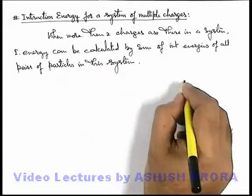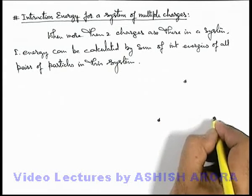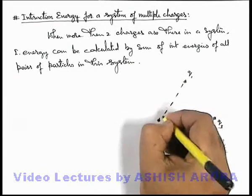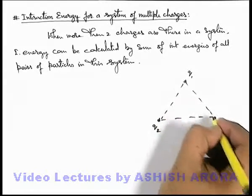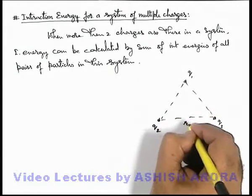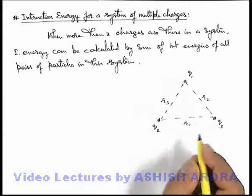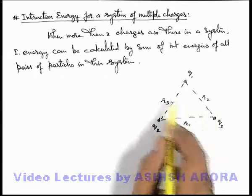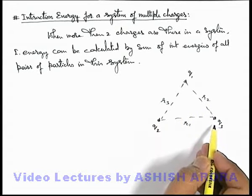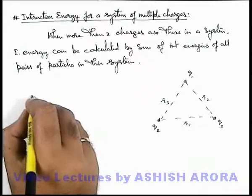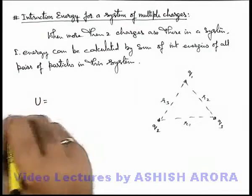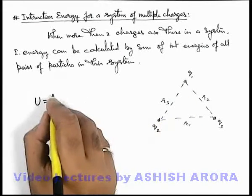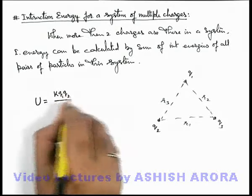For example, if we consider a system of 3 charges placed at the vertices of a triangle, say these are located at distances r1, r2, r3. For ease in calculation, we take r1 to be the distance opposite to q1, r2 opposite to q2, and r3 opposite to q3. We are required to find the interaction energy of this system. There are 3 pairs of charges, so the interaction energy for q1 and q2 we can write as k·q1·q2 / r3.